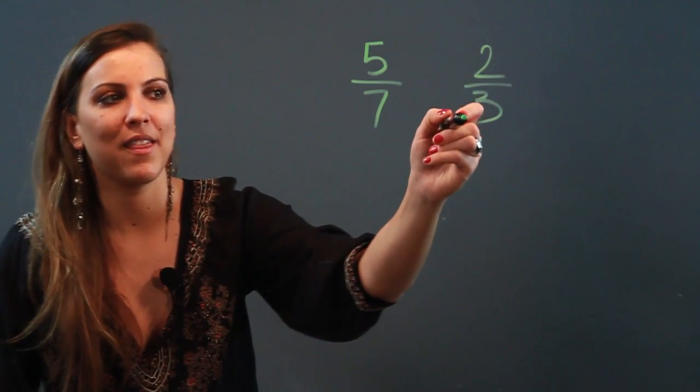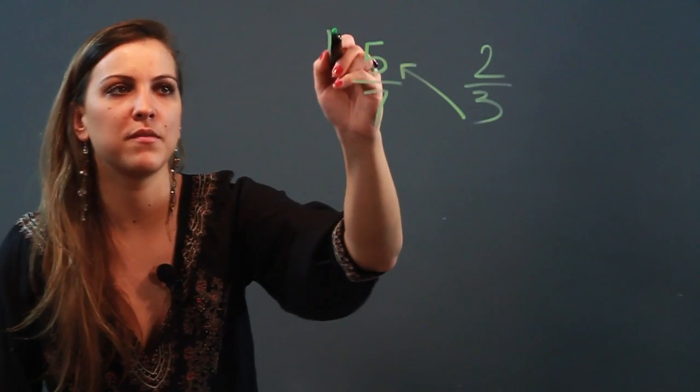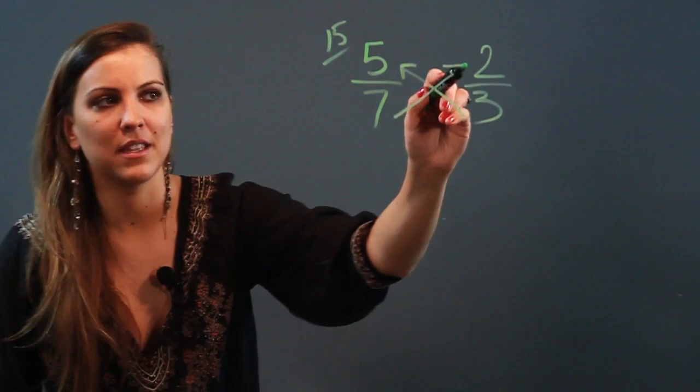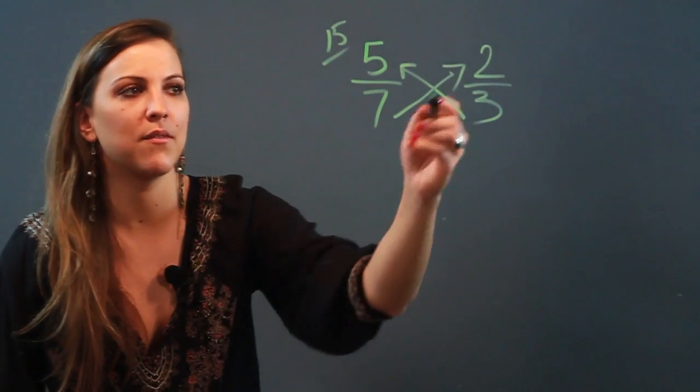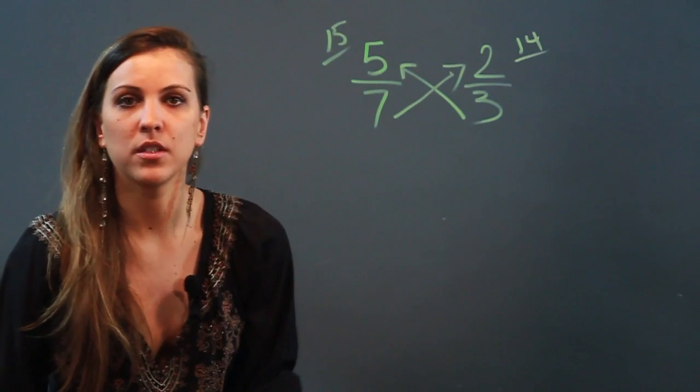So I'm going to cross multiply this denominator times this numerator, and when I do that, 3 times 5 is 15. And then I'm going to cross multiply this denominator times this numerator, and when I do that, 7 times 2 is 14. And now all I have to do is look at the products.